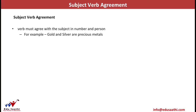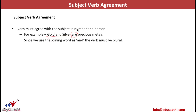For example, in the sentence 'Gold and silver are precious metals,' there are two subjects: gold and silver. Since there are two subjects, it is a plural subject, and since it is a plural subject the verb must also be plural — the plural verb is 'are.' We use the conjunction 'and,' so the verb is plural.